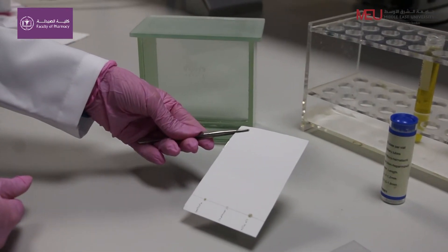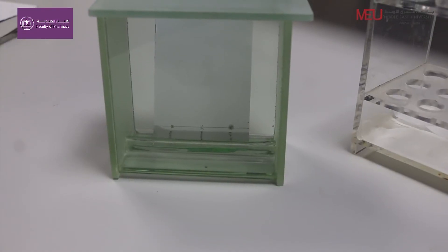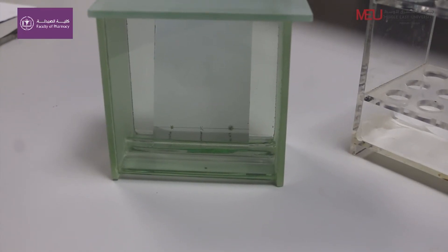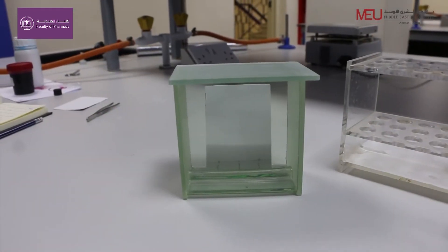Using the tweezers provided, place the plate upright in the correct mobile phase. Do not move the TLC jar once the plate has been placed inside. Observe the mobile phase rising up the plate, and when it is one centimeter from the top of the plate, remove it using the tweezers.